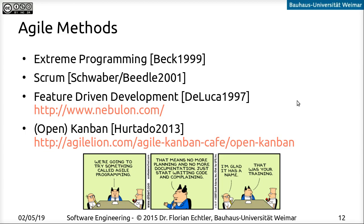Let's continue with an overview of the Agile methods that are often used in practice. There's Extreme Programming and Scrum, Feature-Driven Development and Kanban, sometimes also called OpenKanban. Two of the most common ones are Extreme Programming and Scrum, and I'd like to go into a bit more detail about these two.